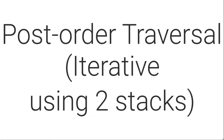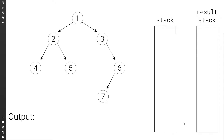Let's see how to do the post-order traversal of a binary tree iteratively using two stacks. Let's start with an example that demonstrates the process. So here we have a simple binary tree, and we have two stacks, one of which is called the result stack. This result stack will in the end have all the nodes in such a way that if we pop them and visit them, the result will be a post-order traversal. So let's see how to actually populate it.